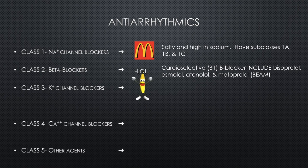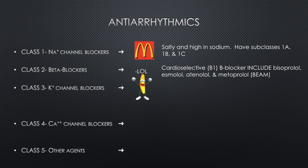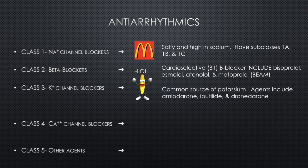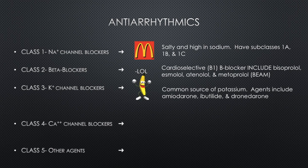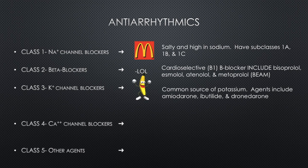Your class three antiarrhythmics are your potassium channel blockers, which I associate with bananas because they are a common source of potassium, and many people associate bananas with potassium. Agents included in this class are amiodarone, ibutilide, and dronedarone.